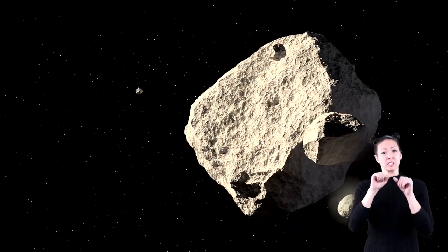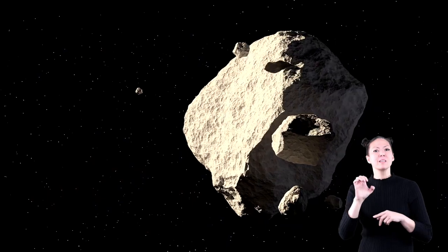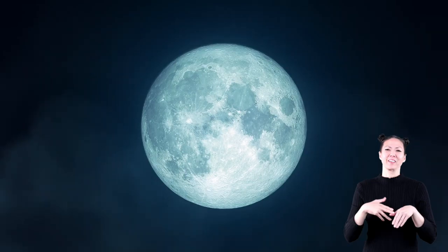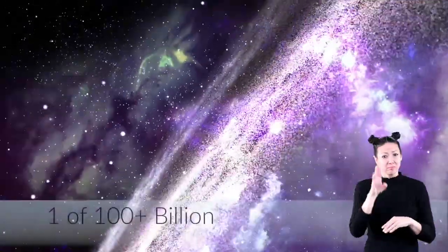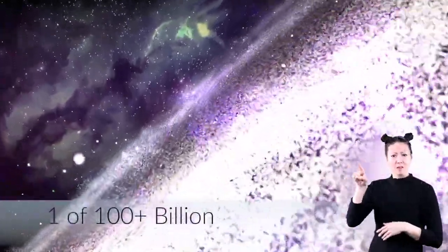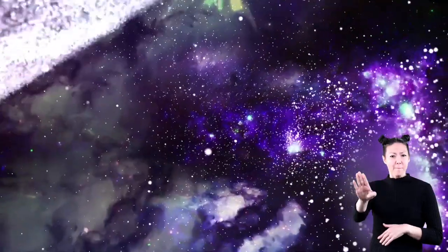Our solar system is made up of space rocks, planets, the Sun, the Moon, and of course, Earth. But did you know that the Milky Way is only one of about a hundred billion galaxies?